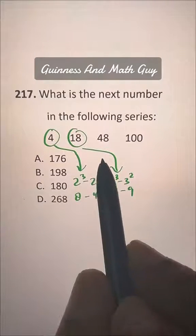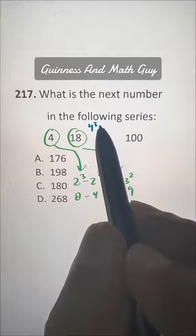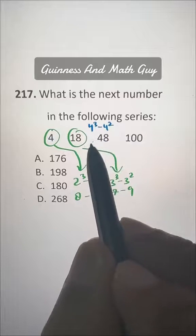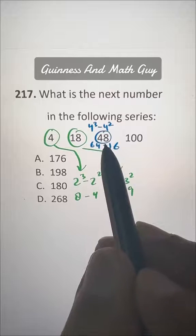Now we have to do 4 cubed minus 4 squared. 4 cubed is 64 minus 4 squared is 16. That is 48.